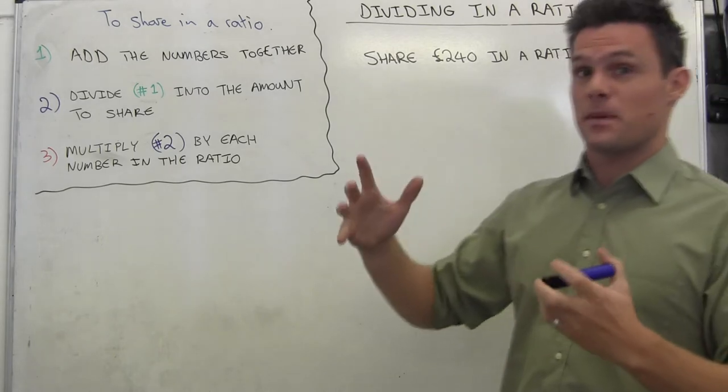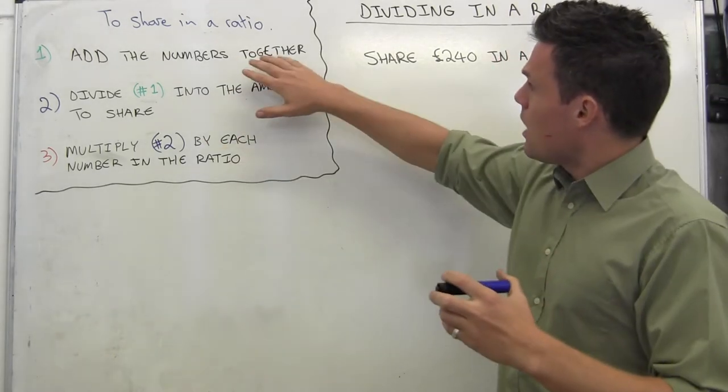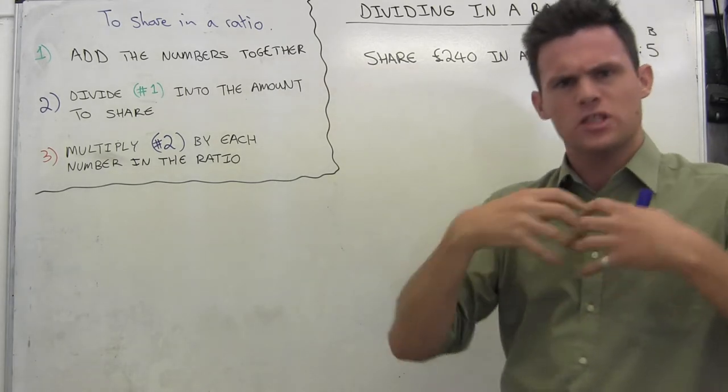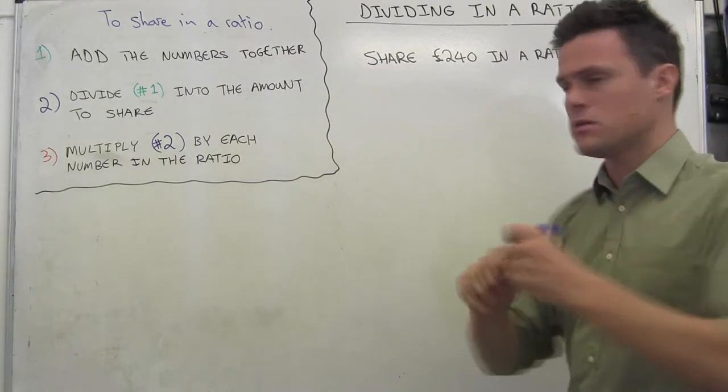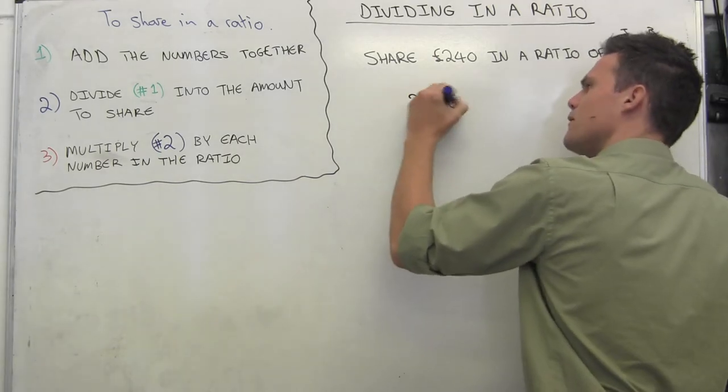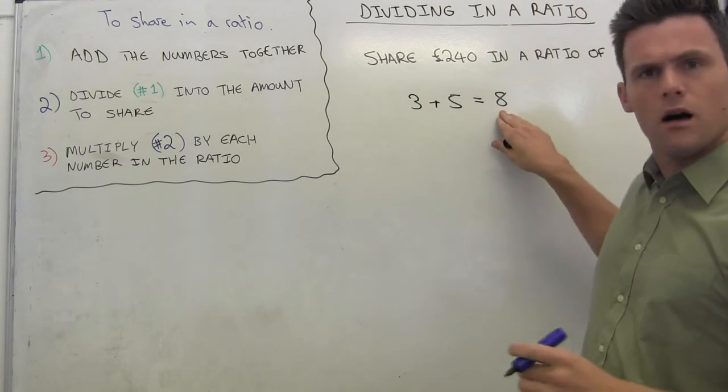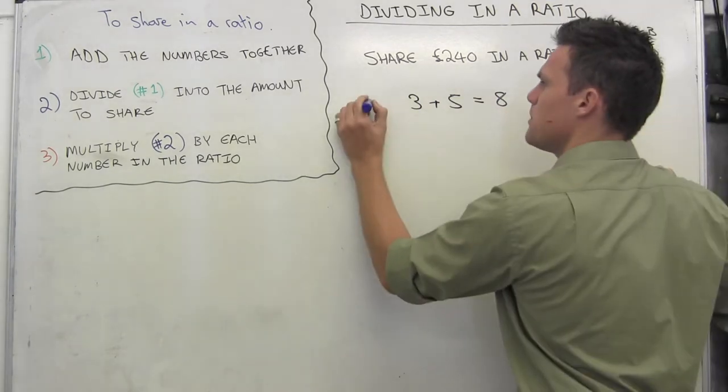And the first step in that is to realize I need to add these numbers together for the simple reason that I need to know how much am I giving away at each point. I'm giving away 3 pounds and 5 pounds, so every time I give something away, I've given away 8 pounds. So that's step number 1.